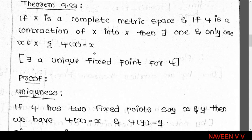The conditions are: X is a complete metric space, meaning every Cauchy sequence in X is convergent. And φ is a contraction of X into X, meaning φ maps X into X and satisfies the contraction condition. Then φ has exactly one fixed point.